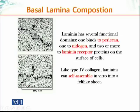In the transmission electron micrograph of laminin, the asymmetrical cross structure and globular domains are visible. Laminin has several functional domains: one binds perlecan, another binds nidogen, and two or more domains bind receptor proteins on the cell surface. Like type 4 collagen, laminins can self-assemble in vitro into felt-like sheets. Initially, it is laminin that forms the basal lamina, with type 4 collagen joining later.